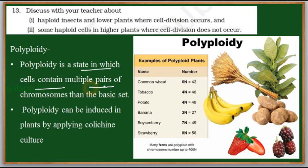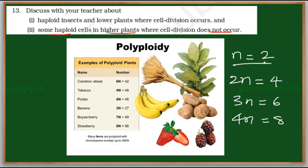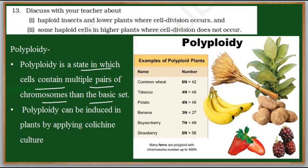Polyploidy is the state in which a cell contains multiple pairs of chromosomes beyond the basic set. The basic set is one — haploid cells have one set of chromosomes. If chromosome numbers increase through repeated division and accumulation, we call it a polyploid condition. The same set of chromosomes keeps multiplying — two sets, three sets, four sets, and so on.